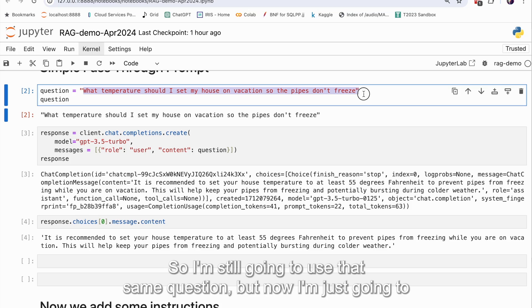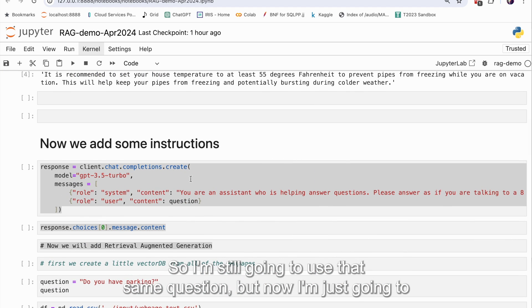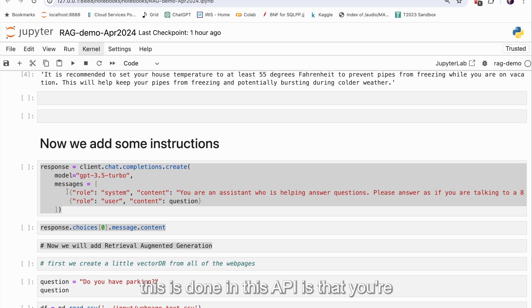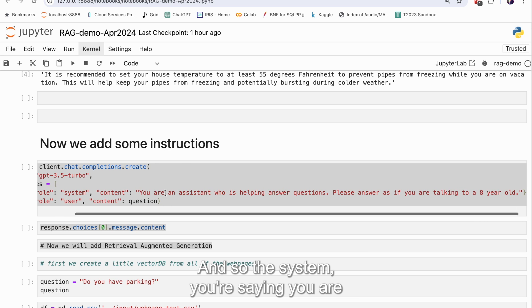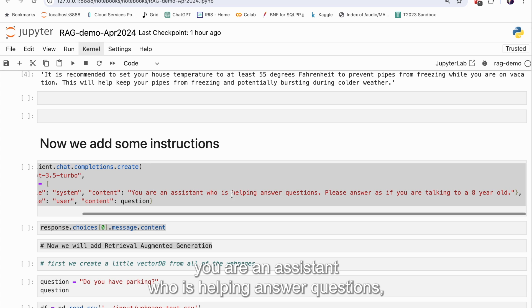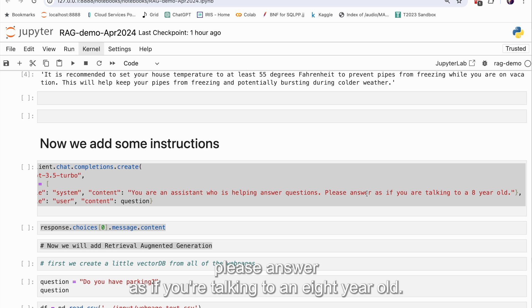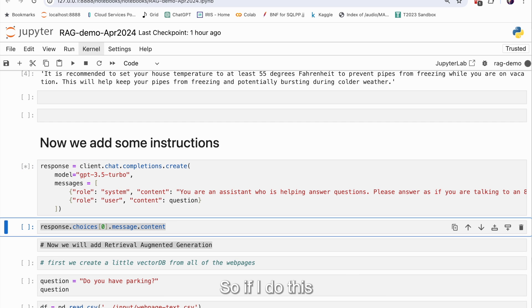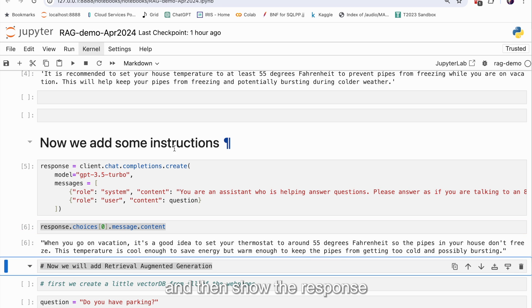So that's a really light prompt before the prompt. So let's take a look at what that looks like in code now. So I'm still going to use that same question, but now I'm just going to add a little bit of instructions here, and you can see the way this is done in this API, is that you're telling the system what it is doing. And so the system, you're saying you are an assistant who is helping answer questions. Please answer as if you're talking to an eight-year-old. So I wanted to just give something that we might be able to identify as an instruction. So if I do this, and then show the response,